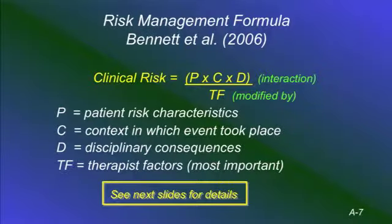Let's start out by looking at a risk management model. What Bennett et al. did — they wrote a book and got a grant from the American Psychological Association Insurance Trust. They looked back to see what caused malpractice lawsuits, what the lawsuits were about, who brought them on, and what the characteristics of the therapists who got themselves into trouble were.